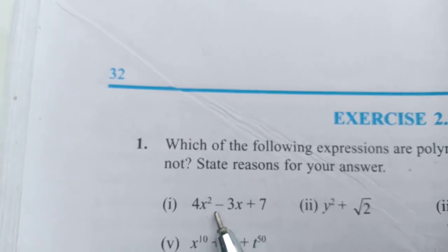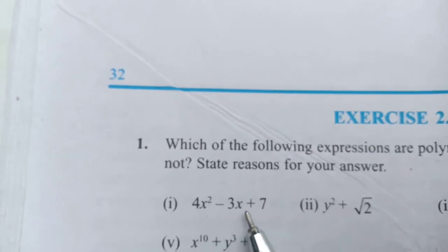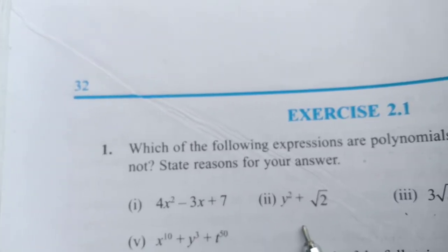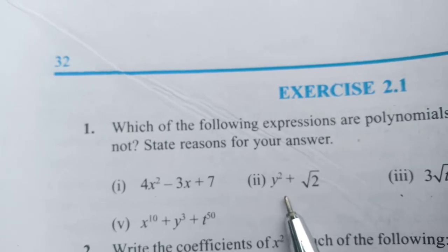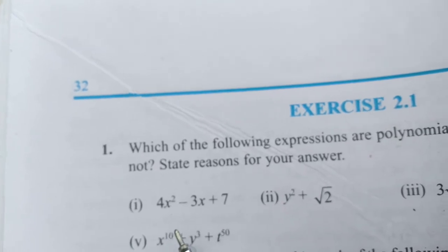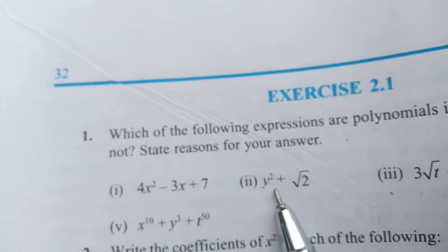Here we have one variable, that is x. Here also x is there, but with one variable only. This polynomial and this polynomial also with one variable, that is y. Then the answer is 1 and 2 are with one variable.